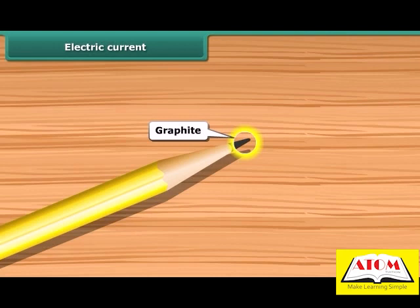Pencil lead is made of graphite. It is a form of carbon. It is a non-metal, but it is a conductor of electricity.